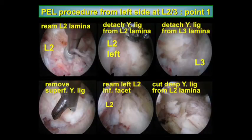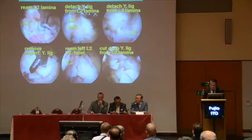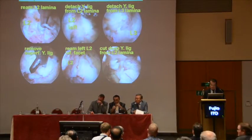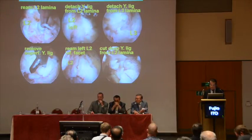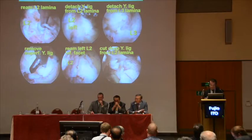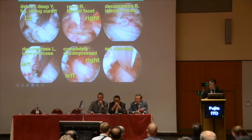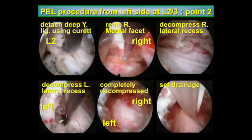These are PEL procedure points of the unilateral approach at L2-3. First, trim the L2 lamina's lower surface with a diamond burr under the endoscope. Then detach the yellow ligament from it. Do the same at the L3 lamina. Remove the superficial yellow ligament with a punch. Trim the left L2 inferior facet. Cut the deep ligament from the L2 lamina. From there, detach the deep ligament at L2 using a curette.